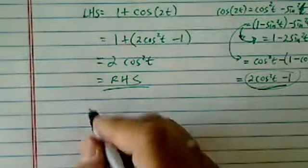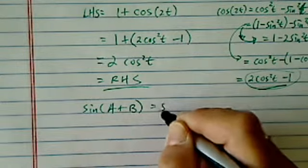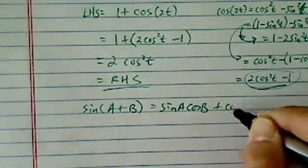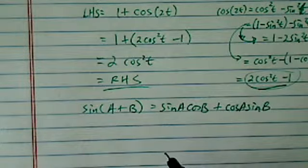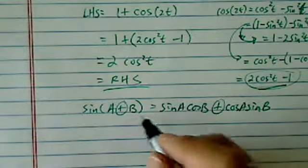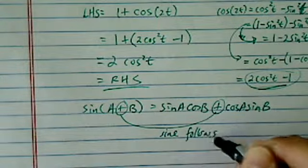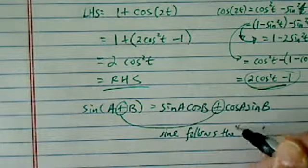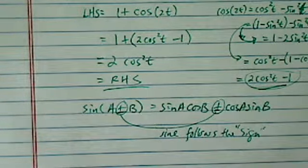Now, let me tell you what other formulas I require my students know, which I think helps a lot. Sine of A plus B equals sine A cosine B plus cosine A sine B. That's one I require them to know because sine follows the sine. So, sine follows the sine. If it's a plus, it's a plus. If it's a minus, it's a minus here.